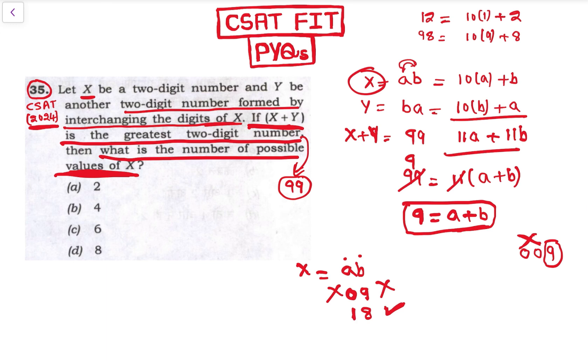And reversed, it is 81. So 18 plus 81 is 99. So ab is 18, which is one possibility.